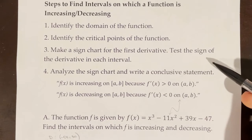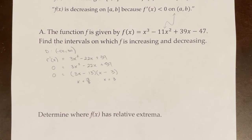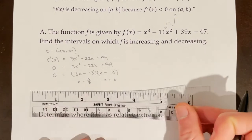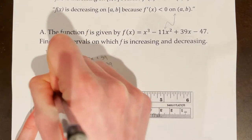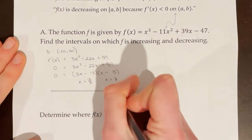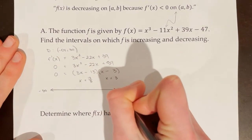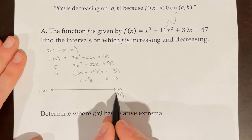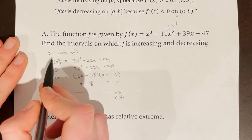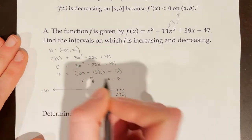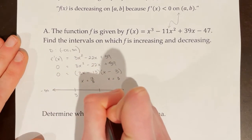The third step is to make a sign chart for the first derivative. The sign chart tells me whether the first derivative is positive or negative at various locations. Since my domain goes from negative infinity to infinity, that's where my sign chart goes. The things that go on my sign chart are critical numbers and domain issues. I have no domain issues here, so I will put my critical numbers of 3 and 13 thirds on the sign chart.